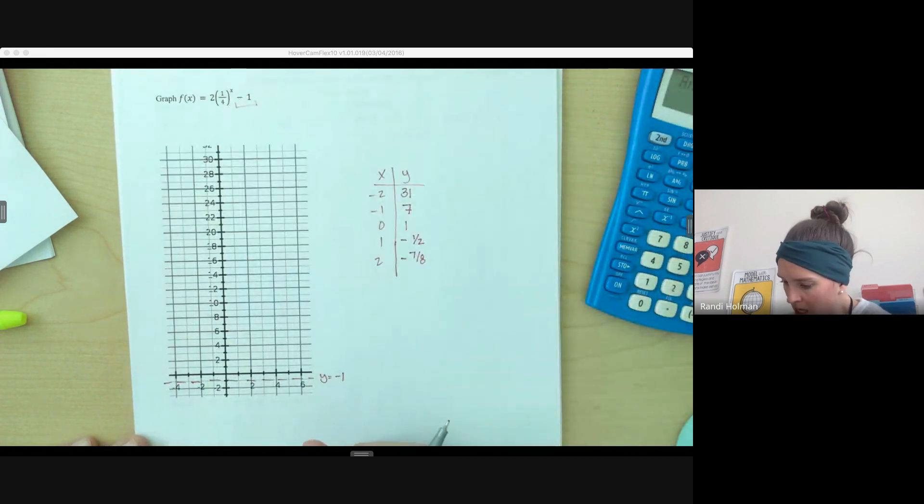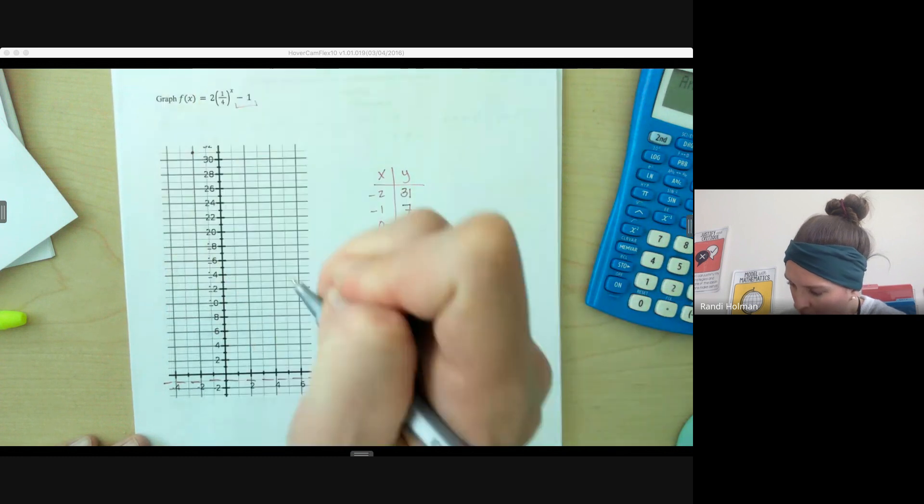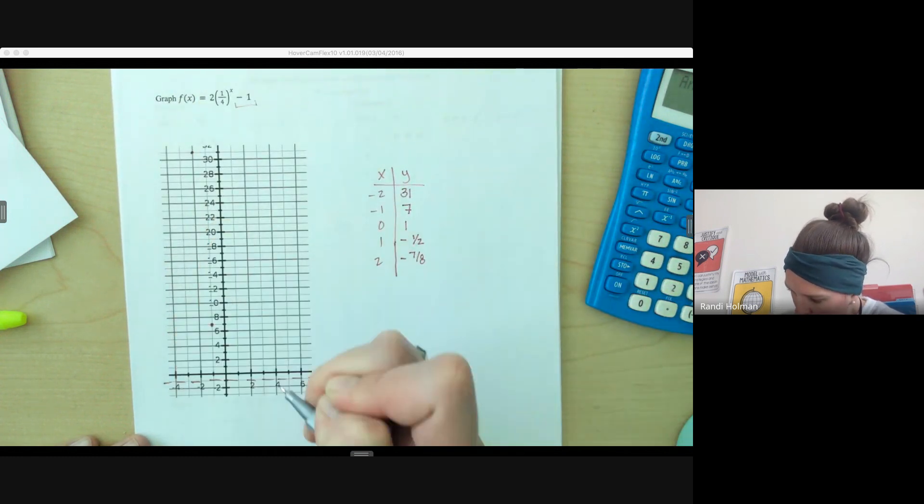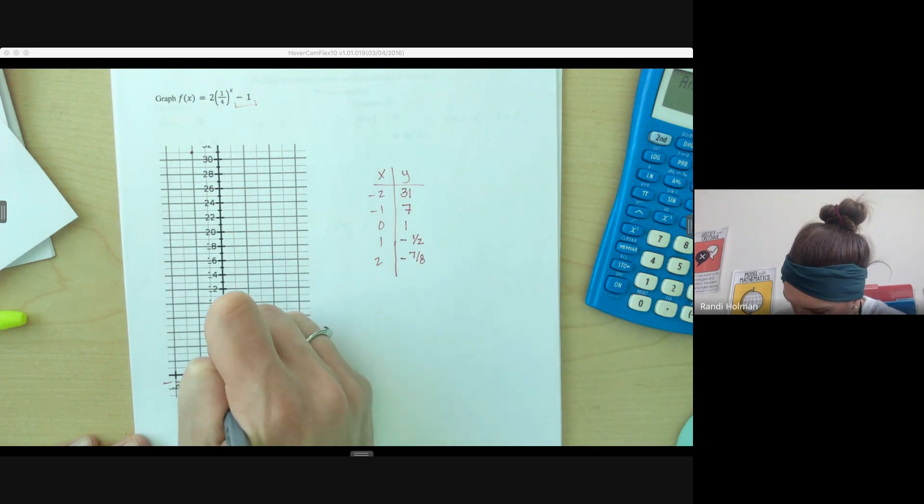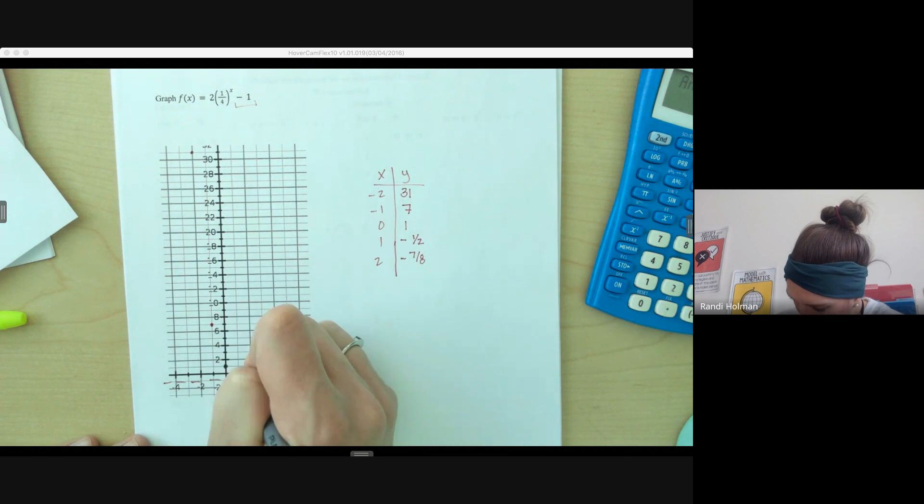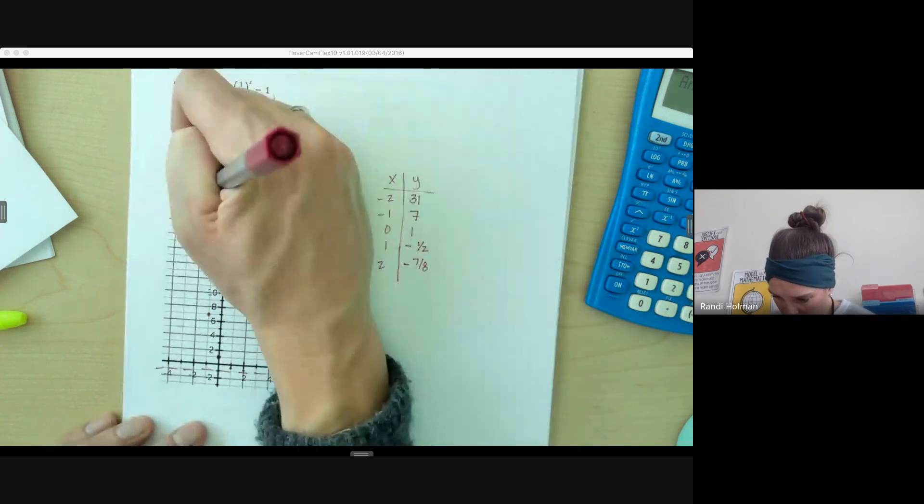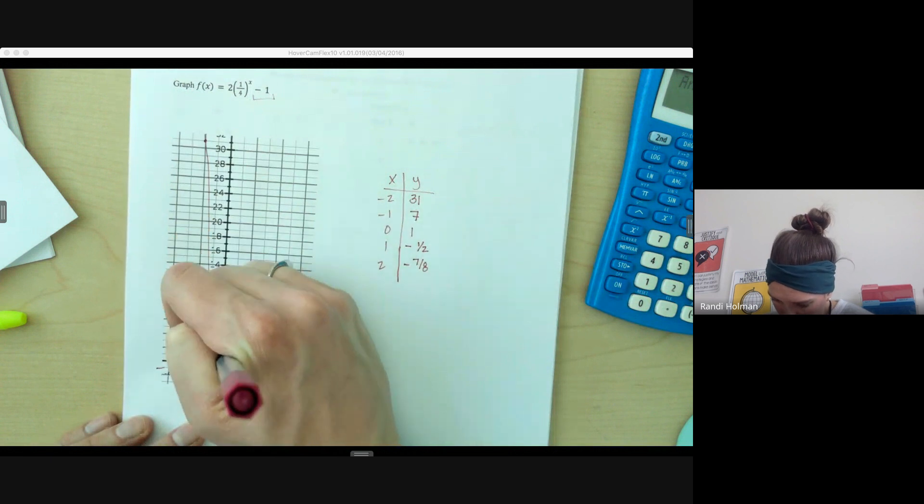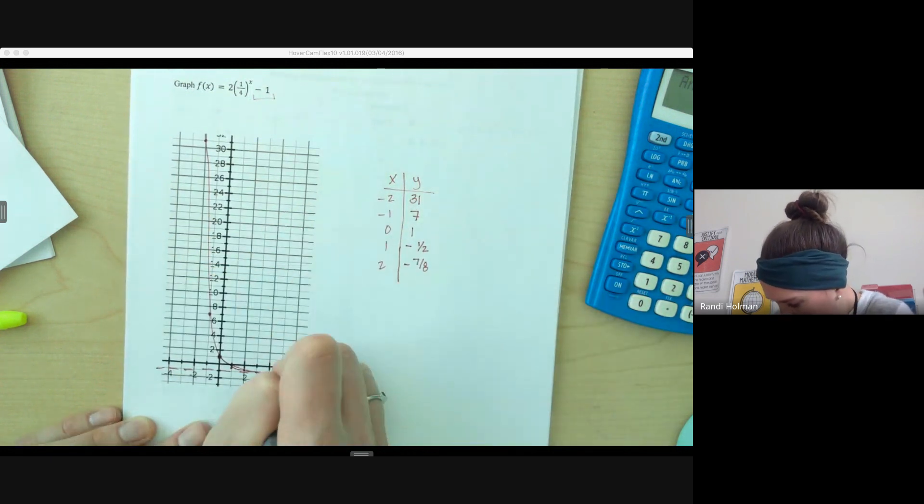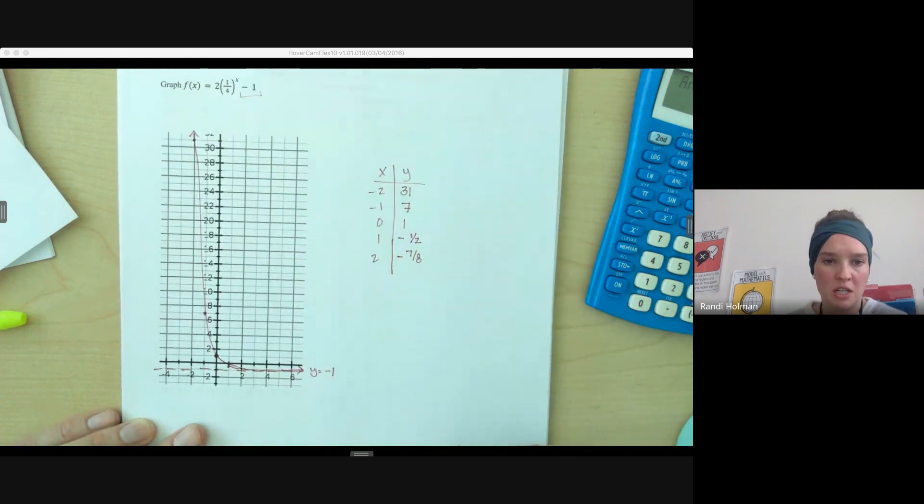So let's plot these points, see what it looks like. So negative 2, we're at 31. Negative 1 at 7. 0 at 1. 1 at negative 1/2. So you can already see that we're coming down below this axis here. And we're approaching this line, y equals negative 1, never actually reaching it.